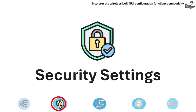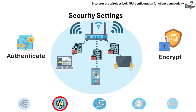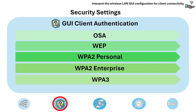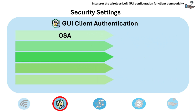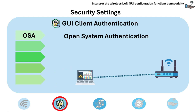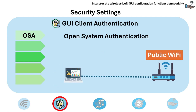Next are the security settings. The purpose is to determine how clients authenticate and encrypt communication with the access point. The following are common security options in the GUI. Open authentication allows unrestricted access to a wireless network — no authentication is required. This is usually found in public Wi-Fi networks and is not secure because any client can connect, making it generally not recommended for secure networks.